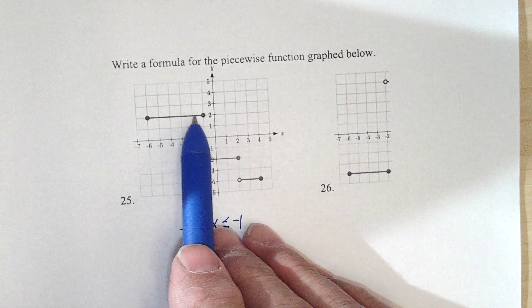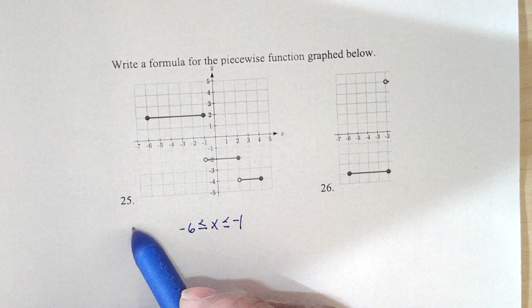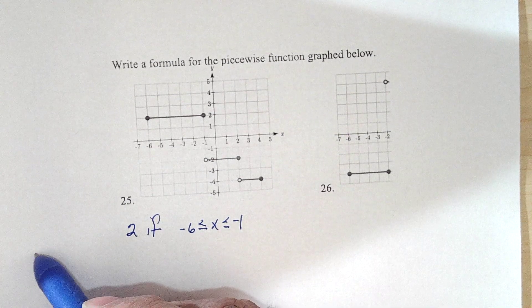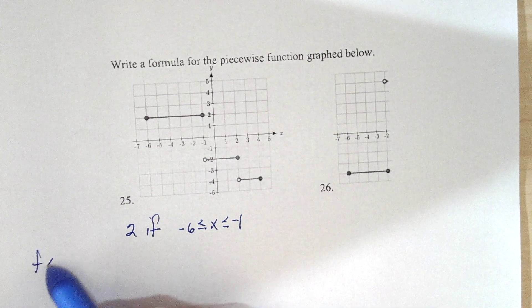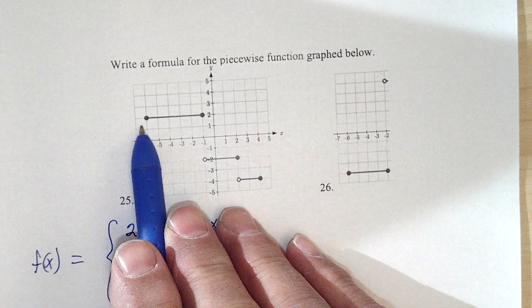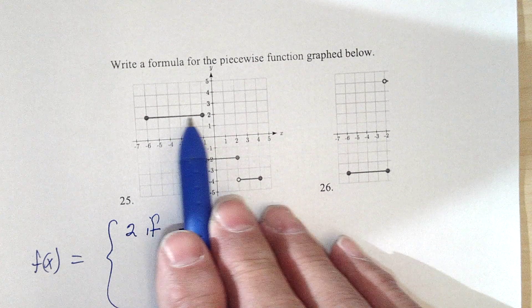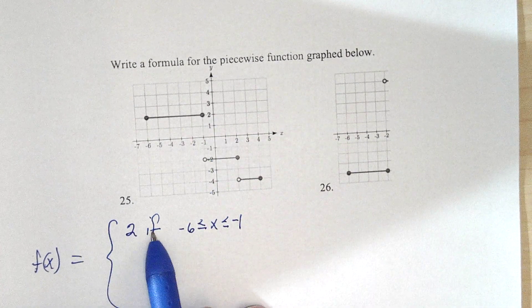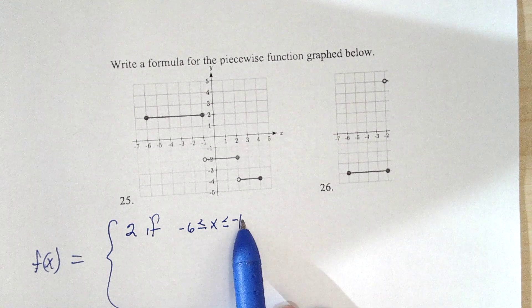And the y value for all that is 2, so it's 2 if, and we'll call this f of x, or whatever we want to call it. It's 2 height, y coordinates 2, y coordinate for the x's is 2 if we're between minus 6 and minus 1.